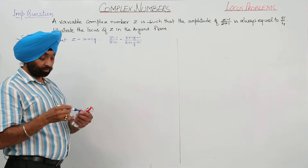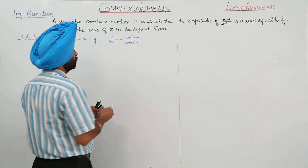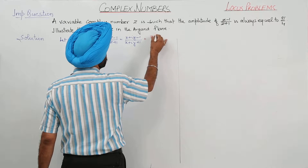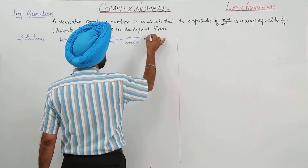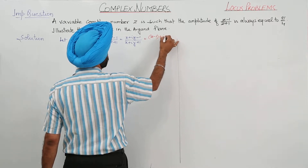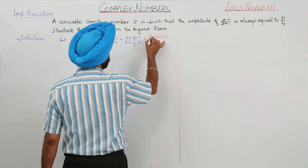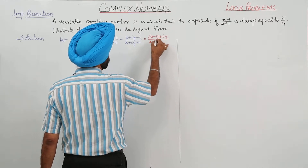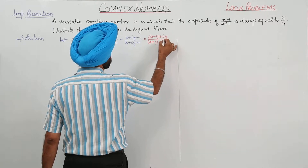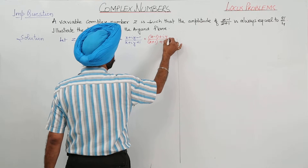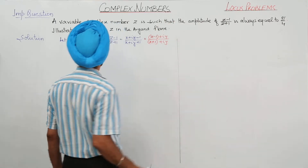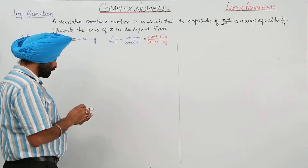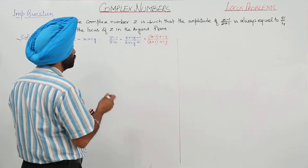Taking real and imaginary parts, we have x minus 1 plus iota y, upon x plus 1 plus iota y. This separates z minus 1 and z plus 1.